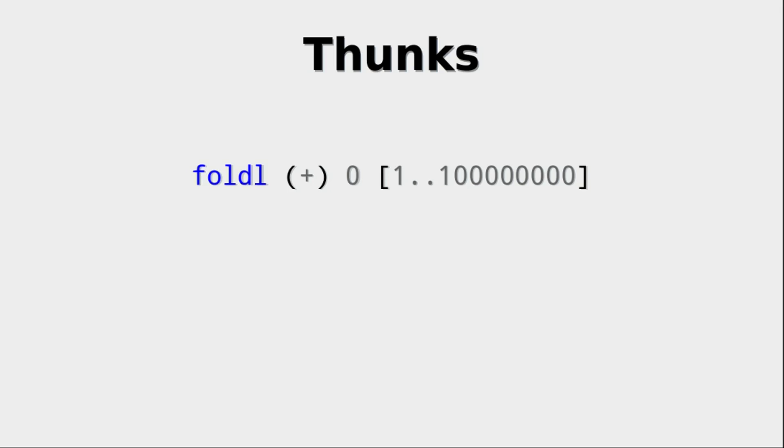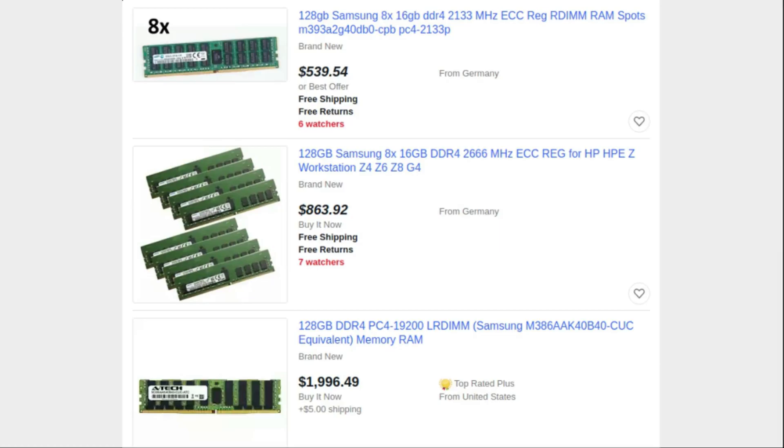This list, of course, is lazy. So it gets produced step by step. Yet the thunk we have to save gets bigger and bigger and bigger. And if you actually want to evaluate this, well, get ready to buy some RAM, because otherwise, you will not be able to.